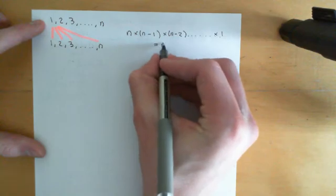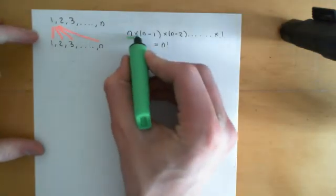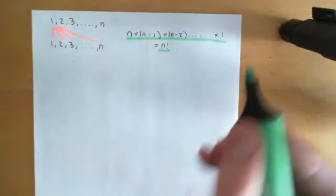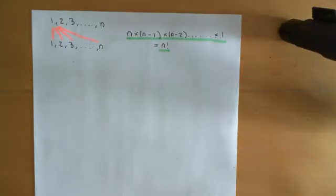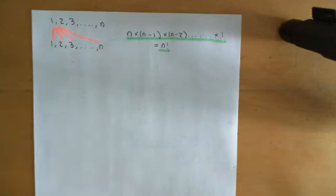So the order of S_n is going to be n factorial, because that's how many different set permutations of this set exist. Just to confirm this: S1 had only one permutation, that's 1 factorial = 1, which works. S2 had two permutations, and that should equal 2 factorial — and indeed, 2 factorial is 2.